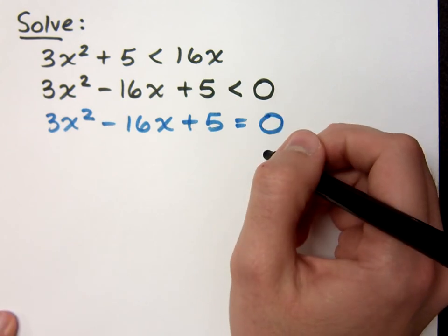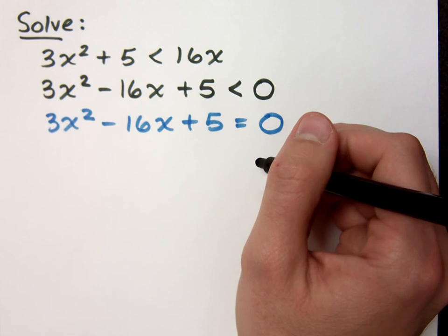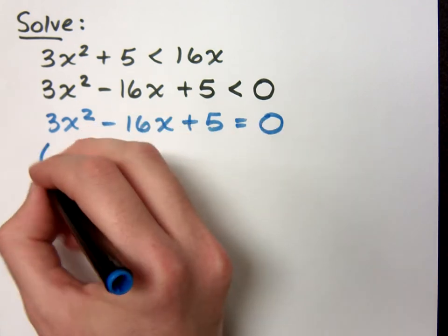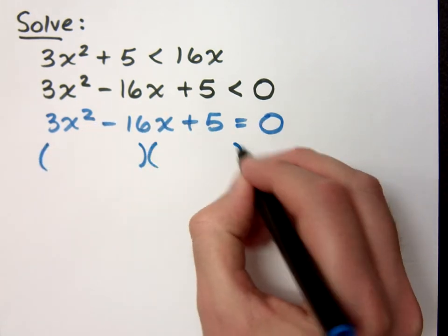And when I look at it this way, I want to factor. I want to find those gatekeepers. I want to find those critical values. So let's try to factor this.